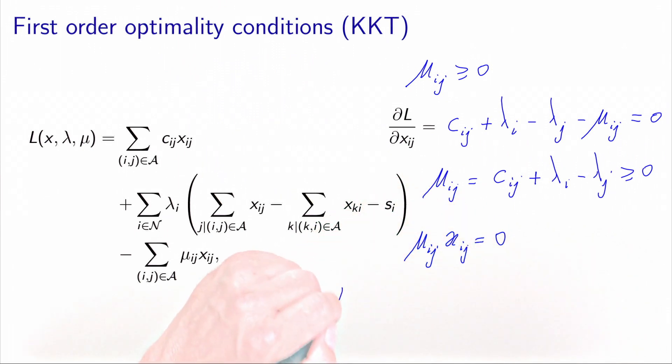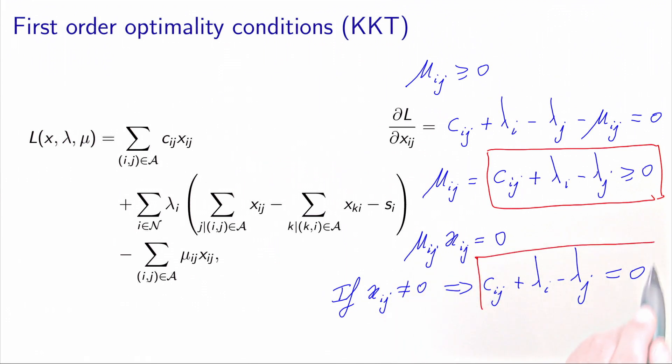And finally, we need that the product between the dual variable mu and the primal variable x must be equal to zero. So it means that if xij is non-zero, so if the arc ij is carrying some flow, then we need cij plus lambda i minus lambda j equals zero. So the flow variable is non-zero.